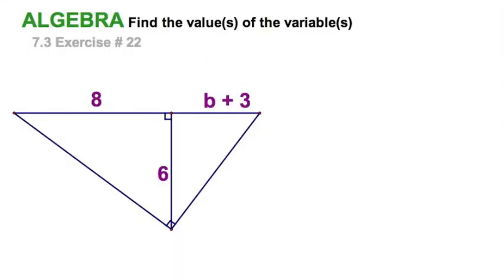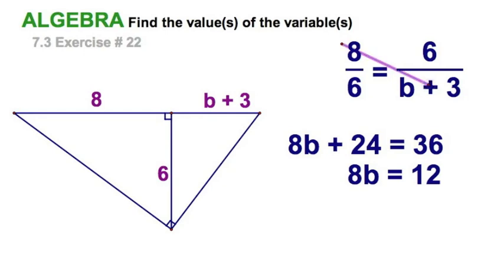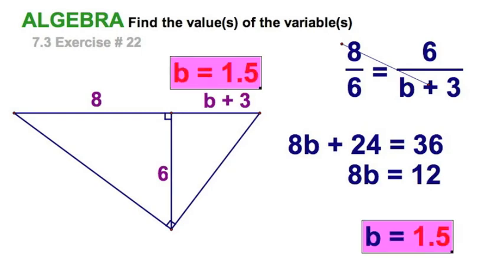Just a little bit different here. I've got the 6 as the geometric mean between 8 and the expression b plus 3. We can still write the proportion that way. 8 is to 6, as 6 is to b plus 3. And right there, remember when you're multiplying this expression, that's 8 times b plus 8 times 3. Distribute the expression, that is. And then you're really done. 1.5, the value of b.